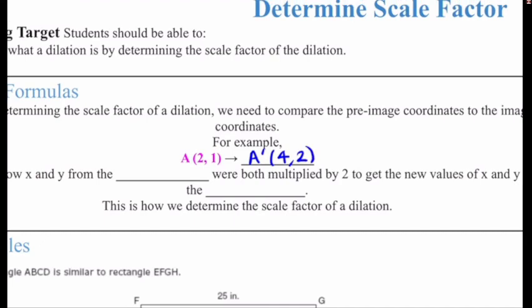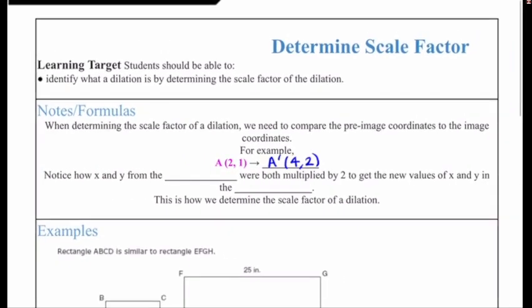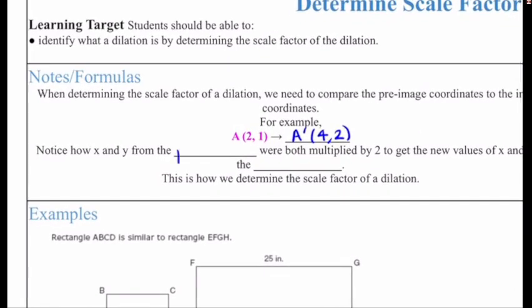So when determining the scale factor of a dilation, we have to compare the pre-image coordinates and the image coordinates. For example, A(2,1), let's say that point becomes A prime (4,2). Notice how x and y from the pre-image coordinate were both multiplied by 2.